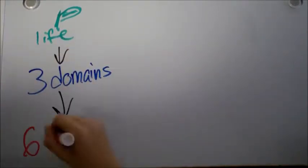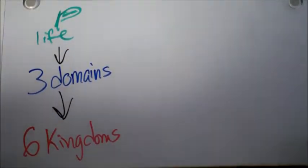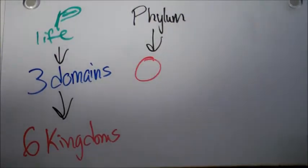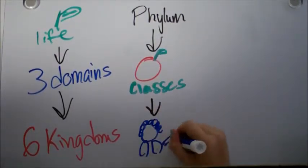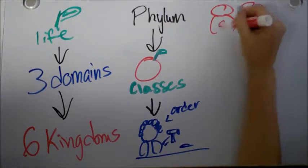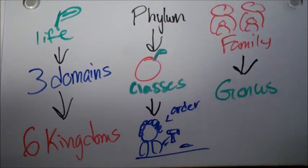So here's the breakdown. There are the three domains. The six kingdoms. The phylum. I scratched that. The phylums. The classes. The orders. The families. And the genus. And the species.